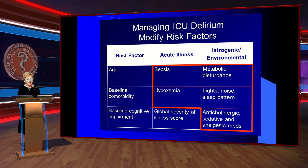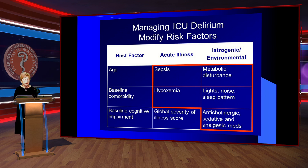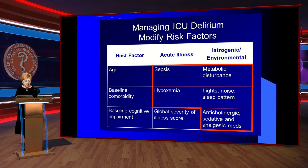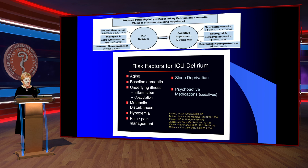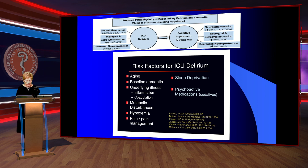Managing ICU delirium requires modifying risk factors: host factors, acute illness, sepsis, hypoxemia, iatrogenic environment, metabolic disturbances, light, noise, sleep patterns, anticholinergic, sedative, and analgesic agents. Risk factors for ICU delirium again include aging, metabolic disturbances, hypoxemia, pain, sleep deprivation, and many other causes.